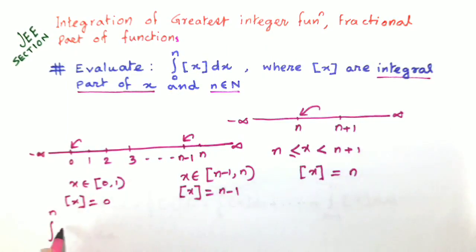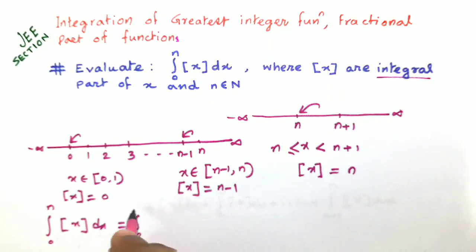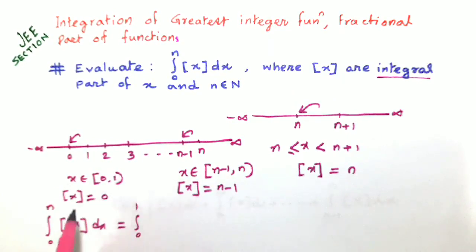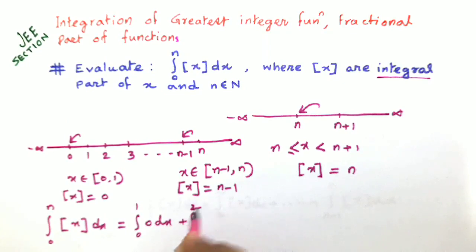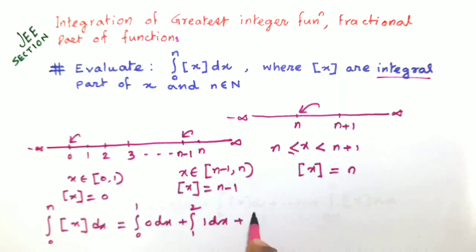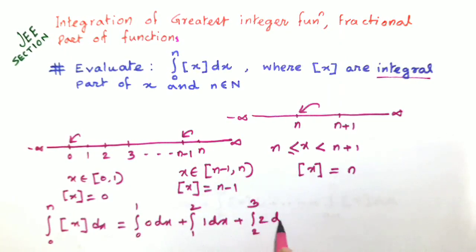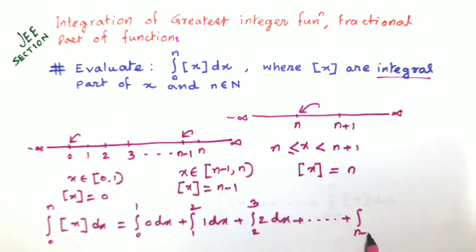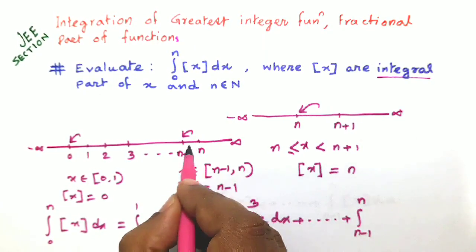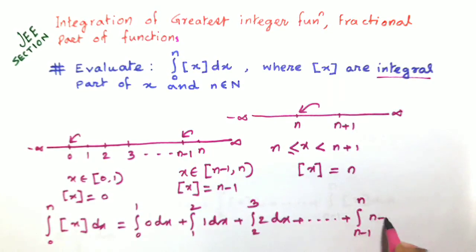Integration from 0 to n of the integral part of x dx equals the sum of split integrals: integration 0 to 1 of 0 dx, plus integration 1 to 2 of 1 dx, plus integration 2 to 3 of 2 dx, and continuing, up to the last piece where the integral part of x is n minus 1 dx from n minus 1 to n.